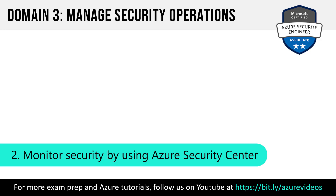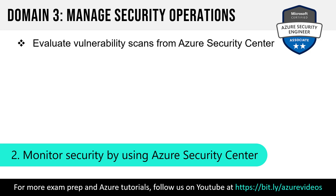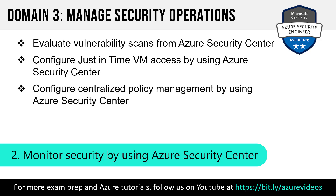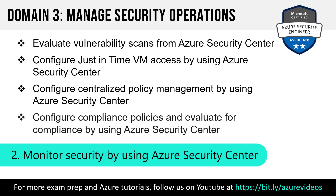Subdomain two is monitor security by using Azure Security Center — I think this is going to be a big one on the exam. Skills include: evaluating vulnerability scans from Azure Security Center (in this context, we're talking about virtual machines), configuring just-in-time VM access using Azure Security Center, which allows control over remote admin access through time-limited activation, and configuring centralized policy management using Azure Security Center. There's so much focus on the prioritized recommendations from Security Center, but not everybody is fully aware of the policy element.